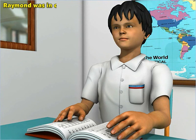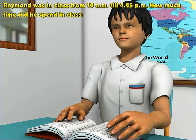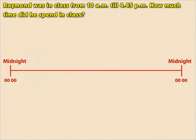On a different day, Raymond was in class from 10 a.m. till 4:45 p.m. How much time did he spend in class? We shall first draw a timeline showing the time spent. We mark 10 a.m., or 1000 hours, as the beginning of the class, and 4:45 p.m., or 16:45, as the end of the class. The total amount of time Raymond spent in class is represented between these two markings.